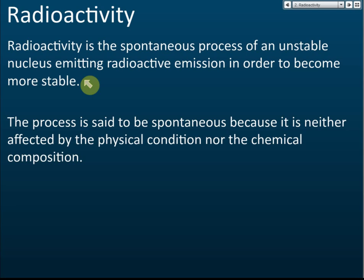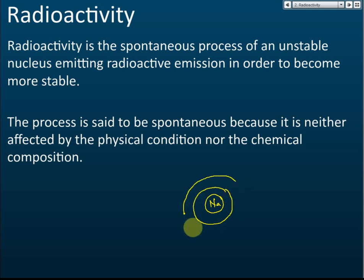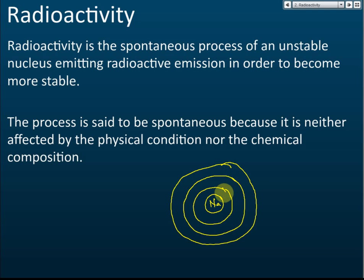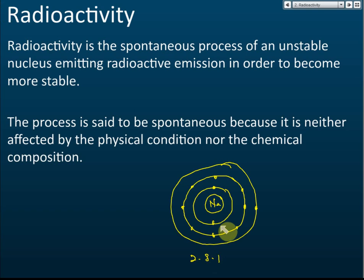When you study chemistry, you have learned that an atom can be unstable if the electron arrangement is not octet. For example, sodium has 11 electrons, so its electron arrangement is 2, 8, 1. This arrangement is not stable because it is not octet.